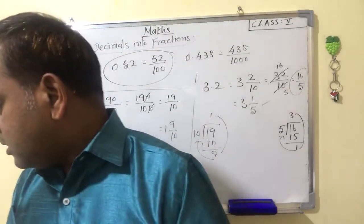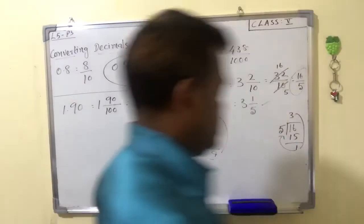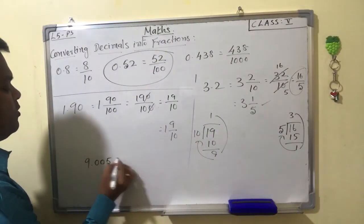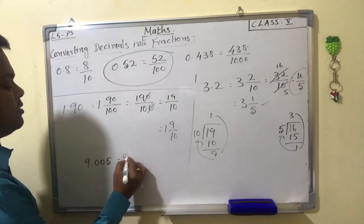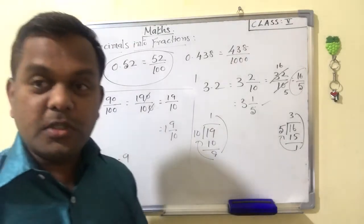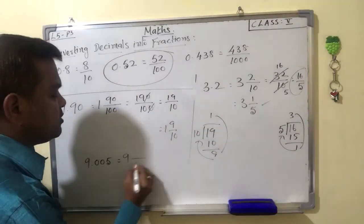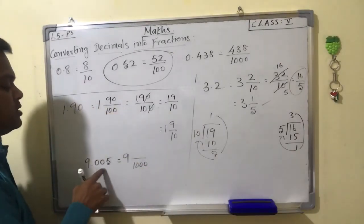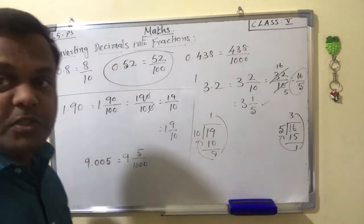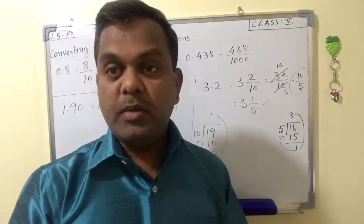One more: 9.005. 9 is your whole number, keep it as itself. The decimal part is 0.005 — there are 3 decimal places, so the denominator is 1000. Write just 5 as the numerator — no need to write the leading zeros. Convert to improper fraction, then simplify, and convert to mixed number again.